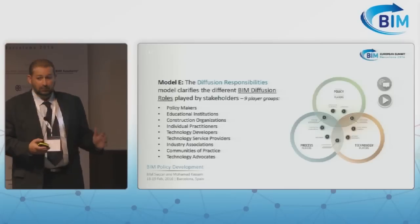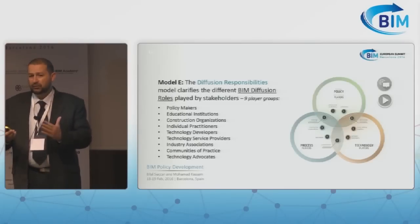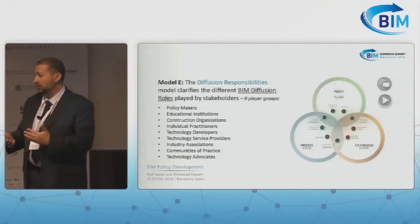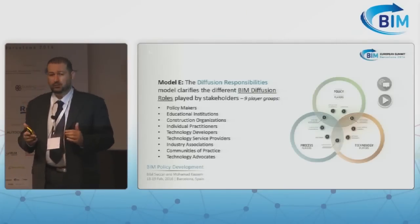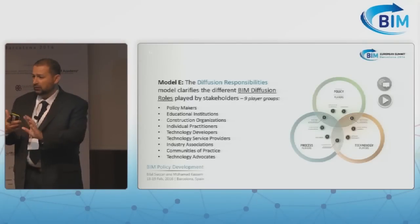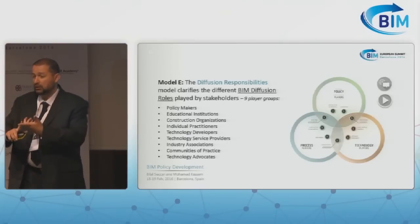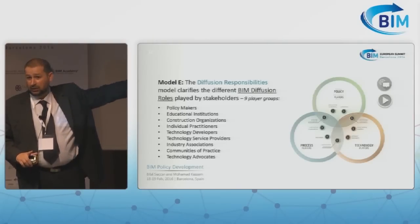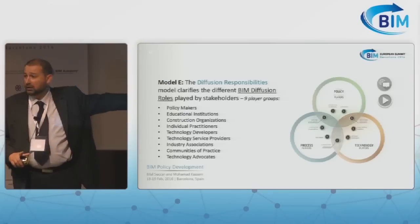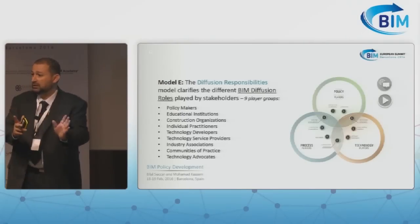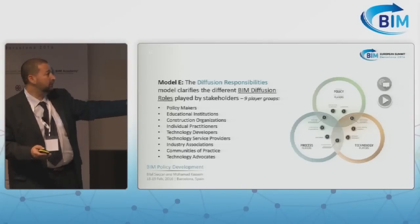The last model addresses who is responsible for BIM diffusion and who should do what. We identified nine players, ranging from the individual to the educational sector, to associations like architects' or engineers' associations, to buildingSMART, technology advocates, and communities of practice or user groups. Eight of these player groups can be mapped against the eight components — who is responsible for developing something or who is doing that. So we can use it both for measurement and for planning.